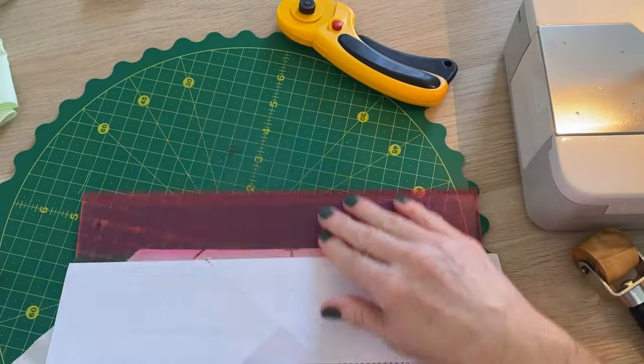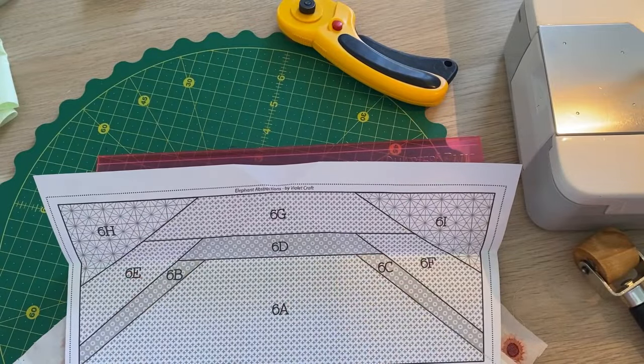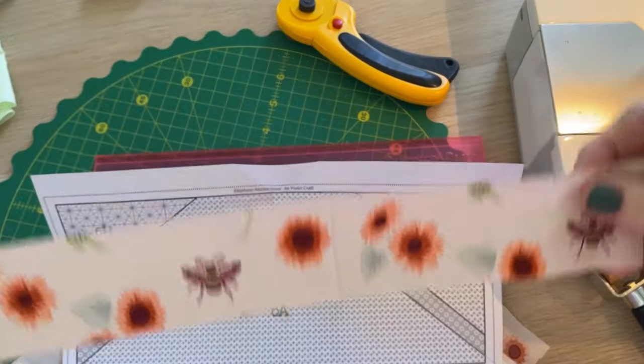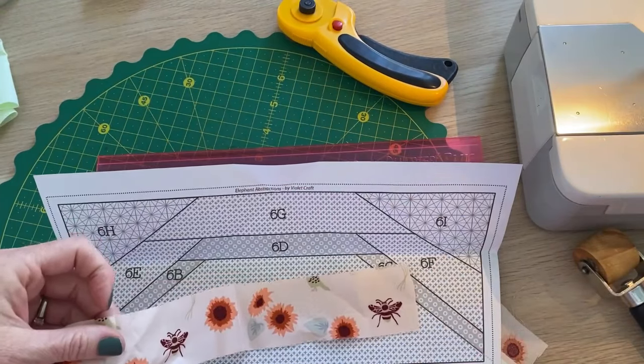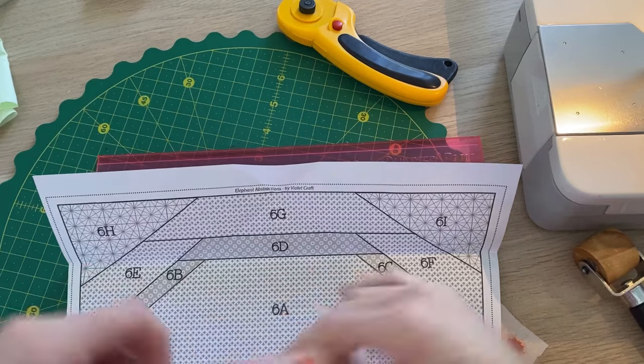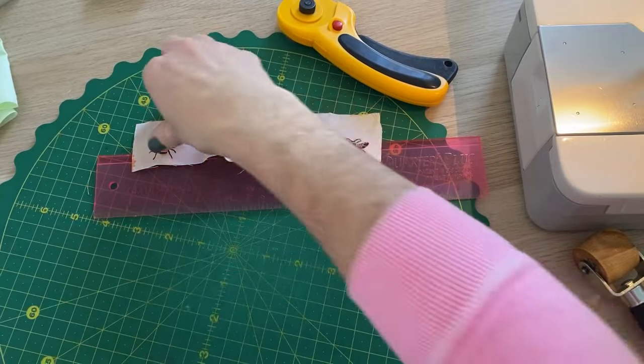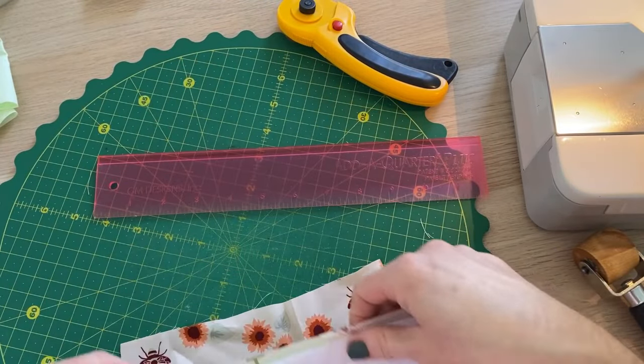Trim your seam allowance. Move these scraps out of the way. And now we'll add our D piece, which is another one of these pieces. I'm just going to cut it about that big.